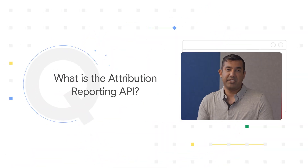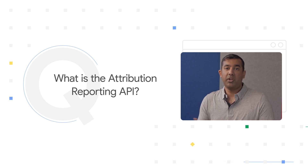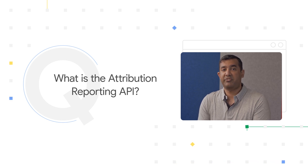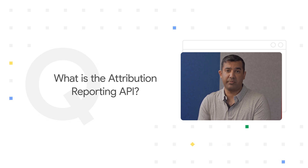Question 1: What is the Attribution Reporting API? We know how important it is for you, as marketers, to measure your advertising performance. That's also our goal with the Attribution Reporting API. This Privacy Sandbox proposal aims to help you understand the impact of your ads without identifying individuals as they navigate across sites, to better protect their privacy.